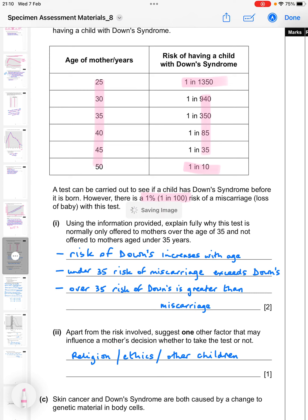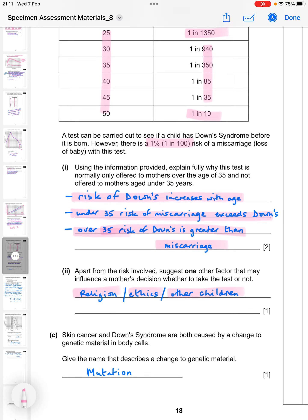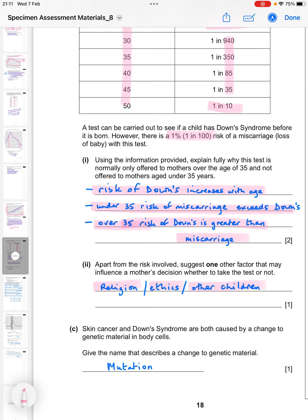So you need to be identifying the fact that the risk of Down syndrome increases with the age of the mother. So if you're under 35 the risk of miscarriage exceeds the risk of Down syndrome, but if you're over 35 the risk of Down syndrome is greater than the risk of miscarriage. So what that means is if you're testing women under the age of 35 they're more likely to miscarry than they are to have Down syndrome, so it's important to get the balance right. So part 2, apart from the risk involved, suggest one other factor that may influence a mother's decision whether to take the test or not. So you could mention something about her religion, it could be against her religious beliefs, ethical issues with it, or she could have other children and worry about how it would impact them if she had to care for a child with Down syndrome. Finally on this page, skin cancer and Down syndrome are both caused by a change to genetic material in body cells. Give the name that describes a change to genetic material. So that is mutation.